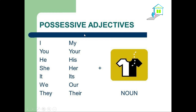Let's move on to possessive adjectives. We have seen before those personal pronouns, also called subject pronouns — we use those with verbs. For example: I play, you play, he plays, she plays, it plays, we play, they play. I dance, you cook, he studies, she sleeps, etc. We use those personal pronouns with verbs.